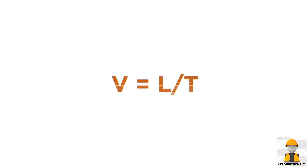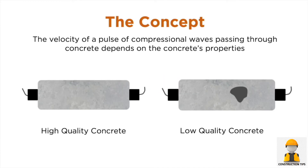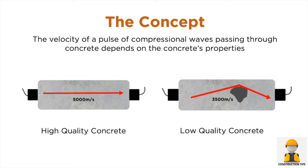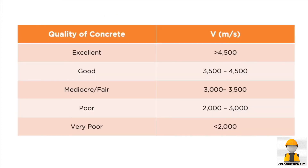One will be able to measure the pulse velocity in the concrete using the equation V equals L over T. In summary, the basic idea behind the pulse velocity method is that the velocity of a pulse depends on the quality of the concrete. In general, the higher the velocity, the higher the quality of concrete. Conversely, a low velocity often yields low quality concrete with the presence of anomalies and deficiencies.